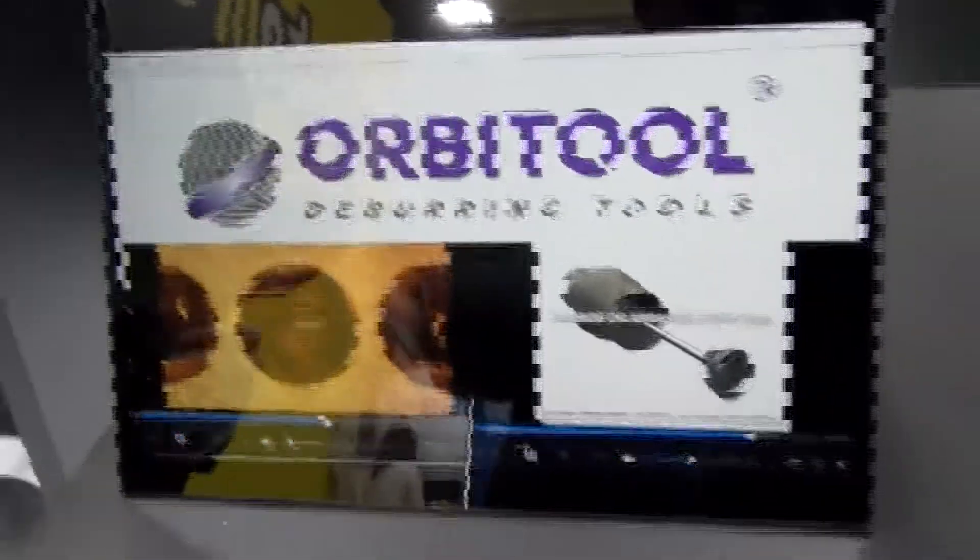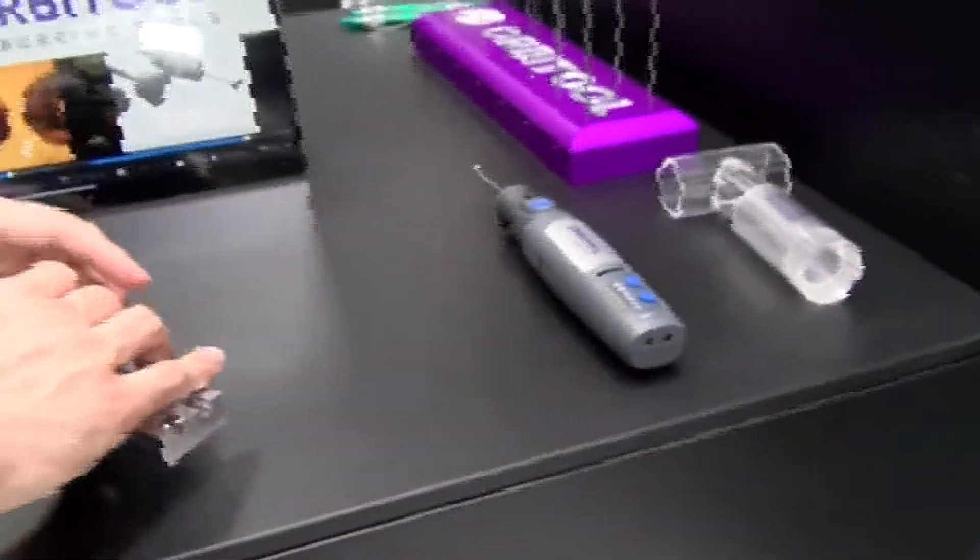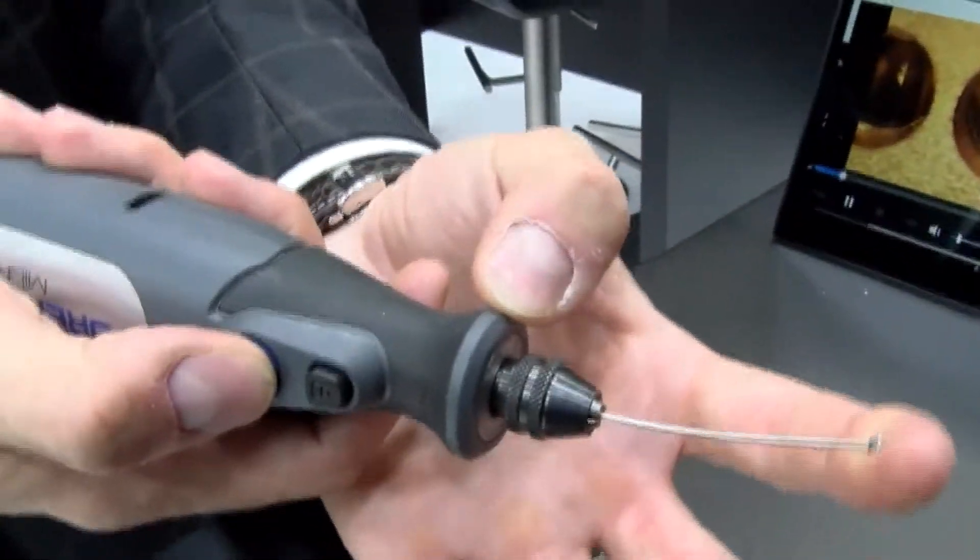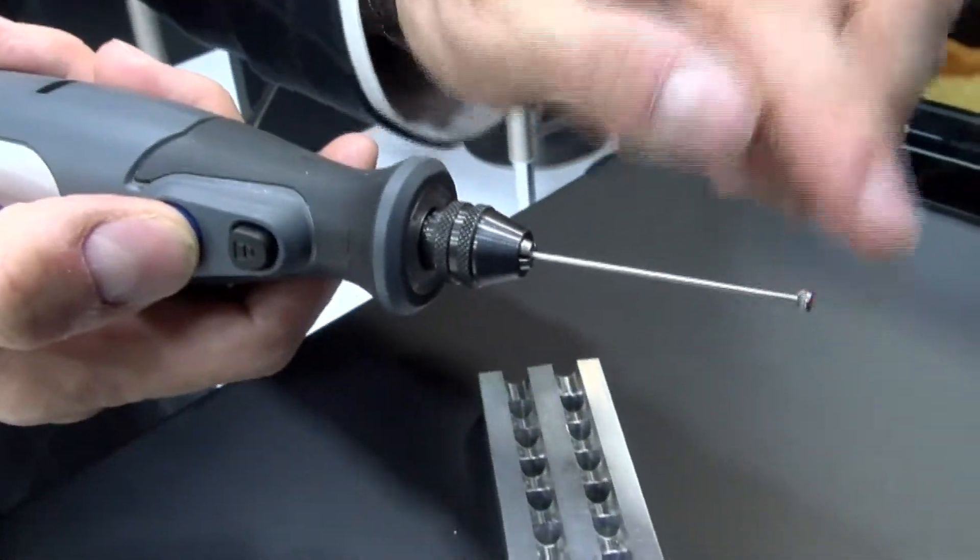Now I'll show you a demonstration of the manual deburring technique. Here we have the cutter, flexible shaft, the carbide burr on the end and the protective ring.